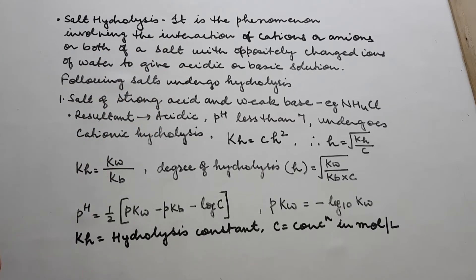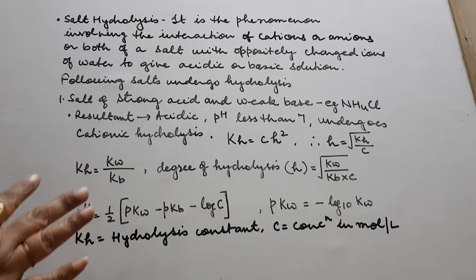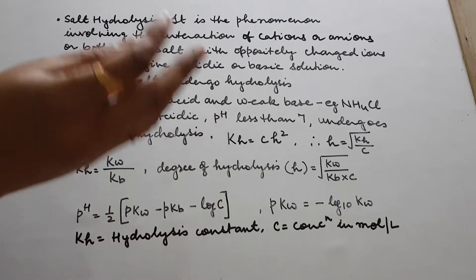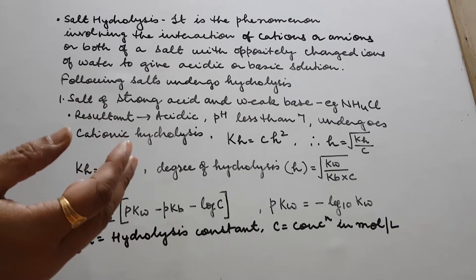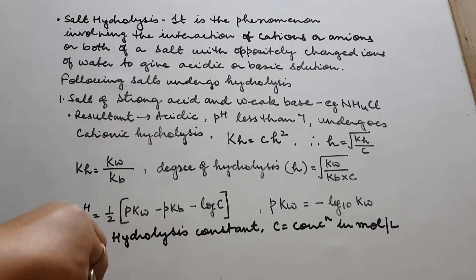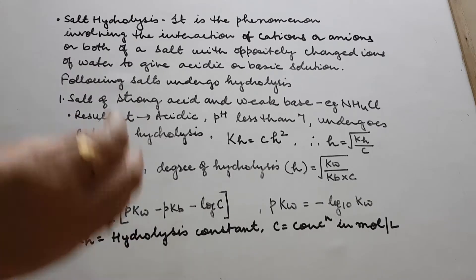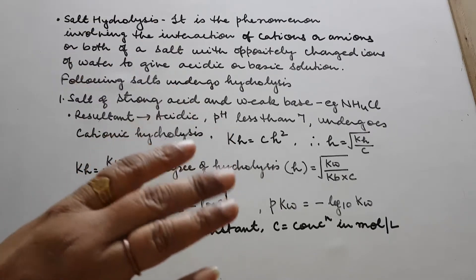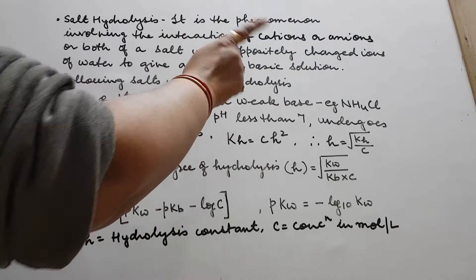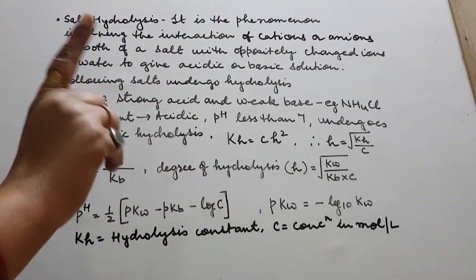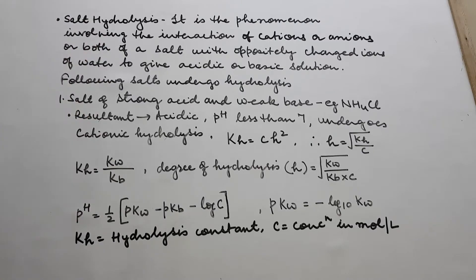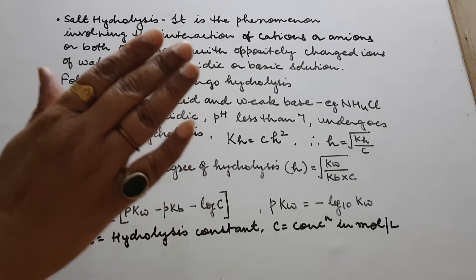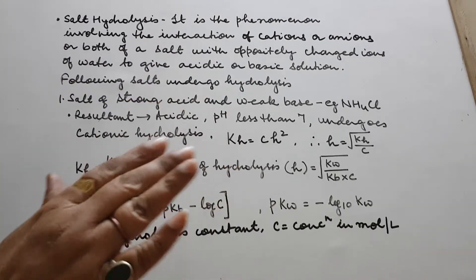Certain salts undergo hydrolysis. If you dissolve a salt in water and the resultant solution is either slightly acidic or basic — not neutral — we say that salt has undergone hydrolysis. If the resultant solution is absolutely neutral, meaning pH 7, then we say the salt has not undergone hydrolysis.